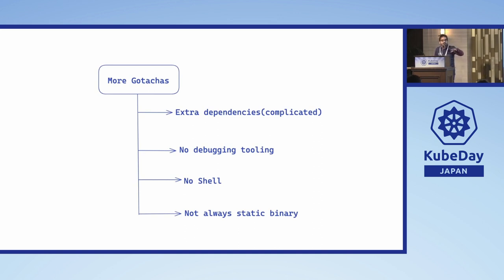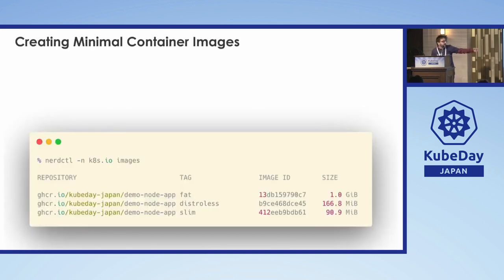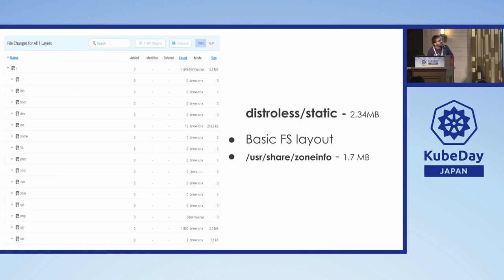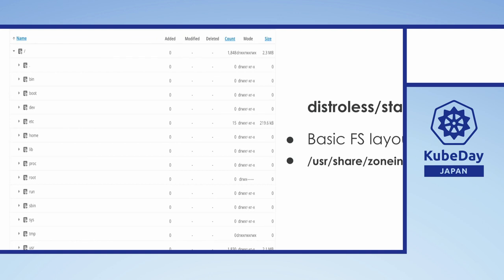The gotchas: extra dependencies are super complicated in scratch images — you have to know them beforehand, there's no debugging tooling, no shell, and not always a static binary. To illustrate the size differences: a big image is 1 GB for a simple Hello World app; the distroless app is 166 MB; and then there's the slim Node app. There are many options for getting to a minimal container image.